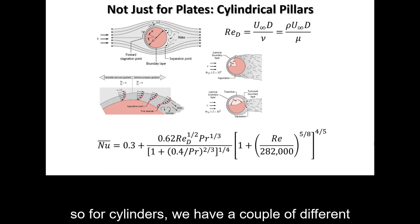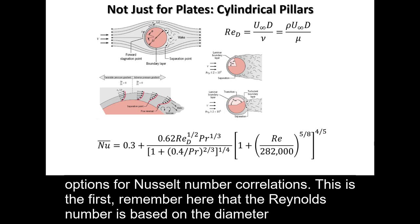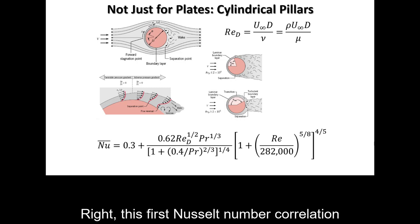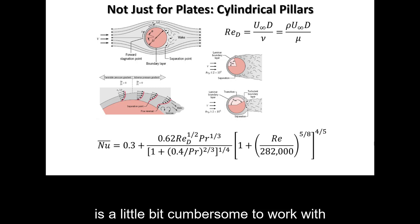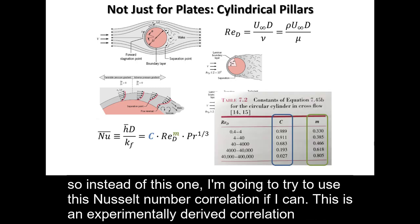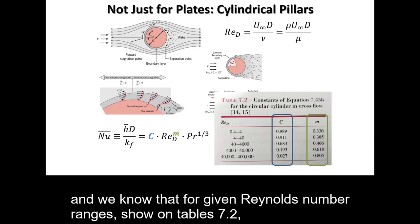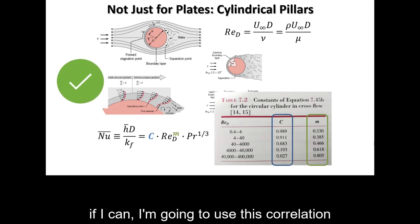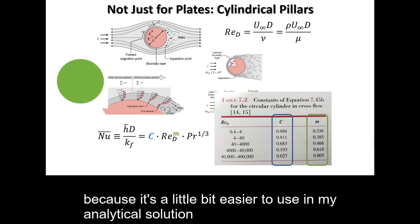For cylinders, we have a couple of different options for Nusselt number correlations. Remember that the Reynolds number is based on the diameter of the cylinder. The first Nusselt number correlation is a little bit cumbersome to work with, so instead I'm going to try to use a simpler experimentally derived correlation. For given Reynolds number ranges shown on Table 7.2, we can find the coefficients C and M. I'm going to use this correlation because it's easier to use in my analytical solution.